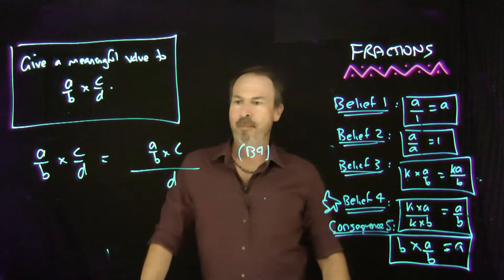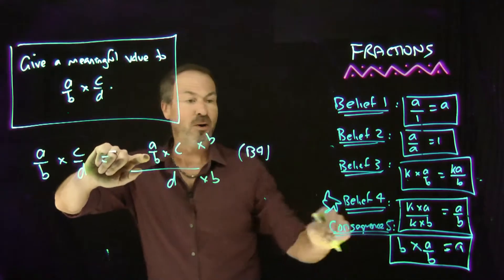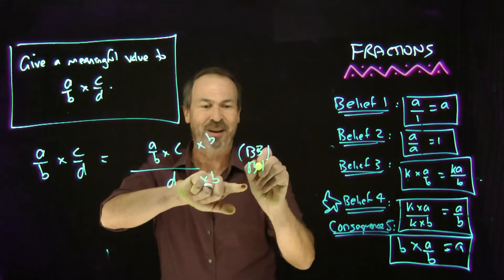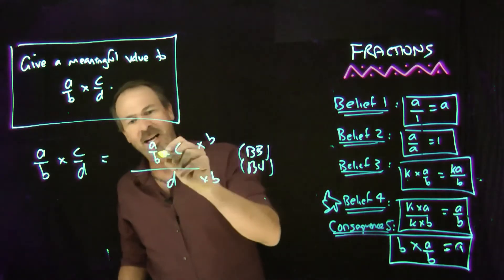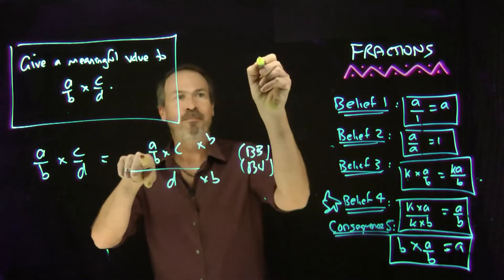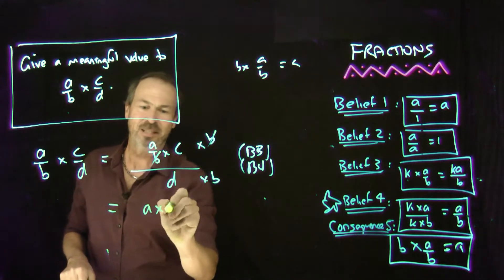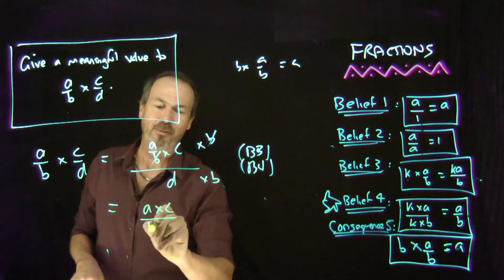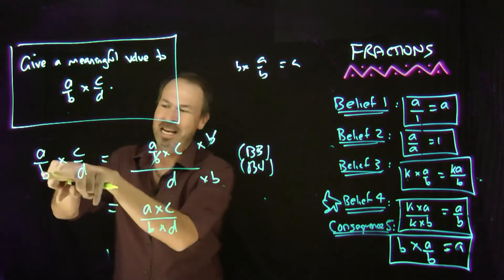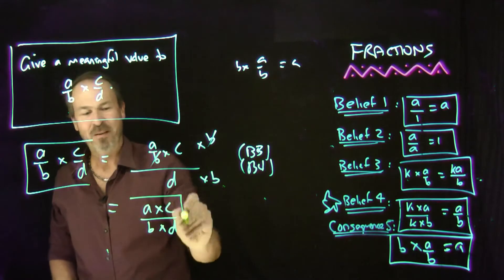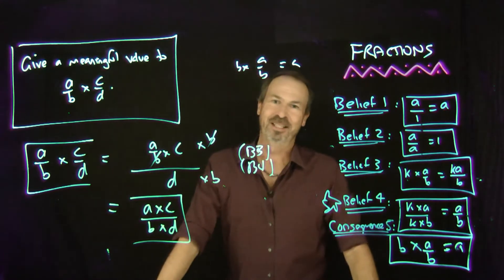I don't like b-ths in the top, so let me multiply by b on the top and b on the bottom — that uses belief number four. Now b times a over b is just a, so that cancels. What I've got on the top is a times c, and on the bottom is b times d. So there is a general rule for multiplying fractions: numerators multiplied, denominators multiplied — ac over bd. It actually follows as a logical consequence of our beliefs. Amazing.